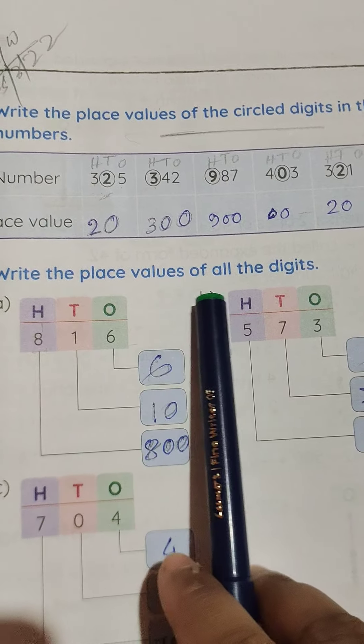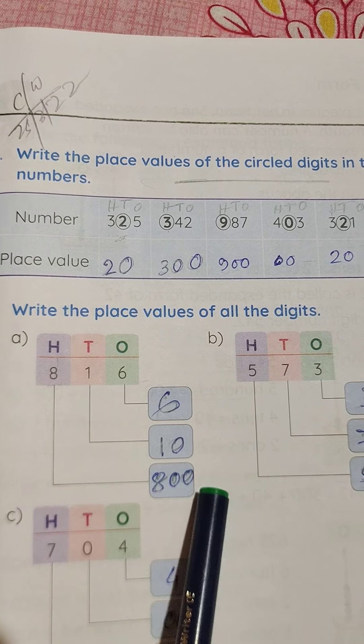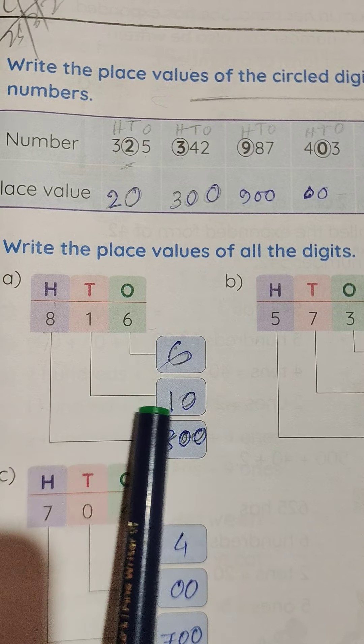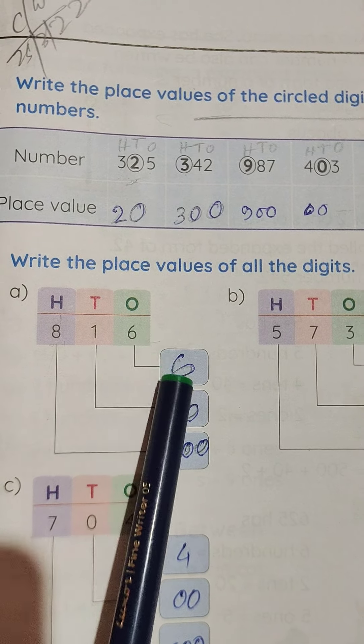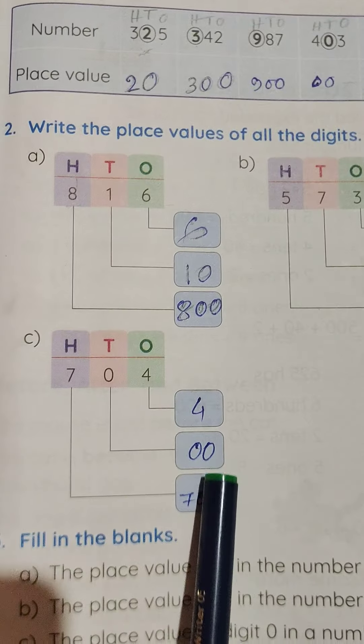Write the place values of all the digits. 8 is in 100's box, therefore it will be 800. 1 in 10's box, 10. And 6 in 1's box, 6. So these are both.